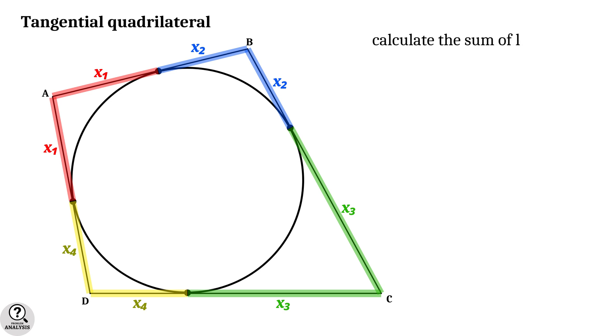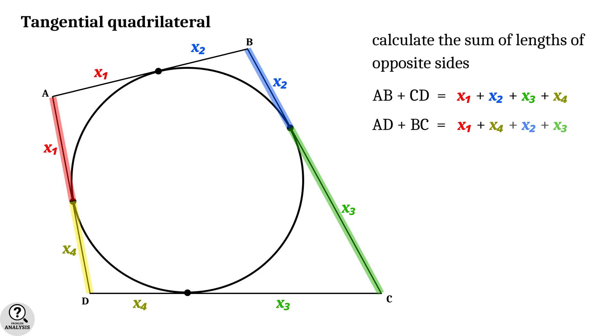Now calculate the sum of lengths of opposite sides. First consider AB plus CD. AB is equal to x1 plus x2 and CD is equal to x3 plus x4. Next sum of opposite sides is AD plus BC. AD is equal to x1 plus x4 and BC equal to x2 plus x3. Obviously, both are equal.